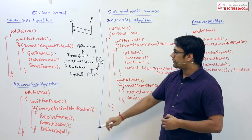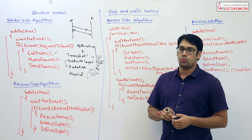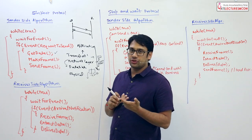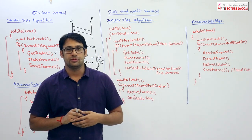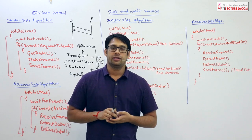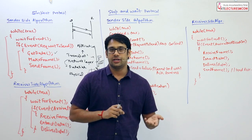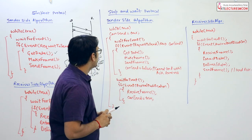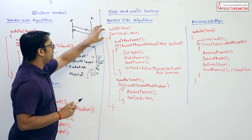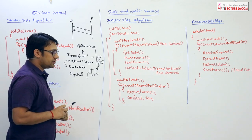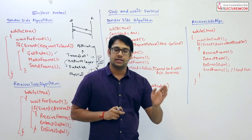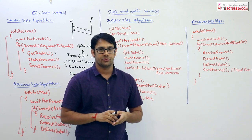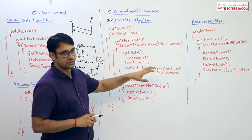As you can see, there is no provision for acknowledgements in the simplest protocol. But we improved this algorithm because if some data is not delivered, there is no way of knowing whether it arrived or not, leading to missing data. So we introduced a new algorithm — the stop-and-wait protocol — where the sender sends packets and the receiver sends back acknowledgements.